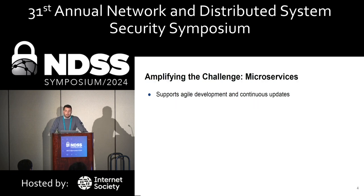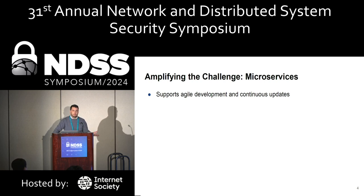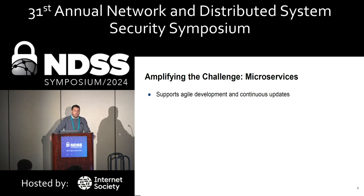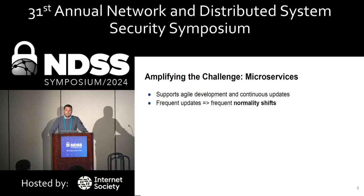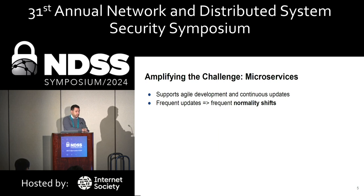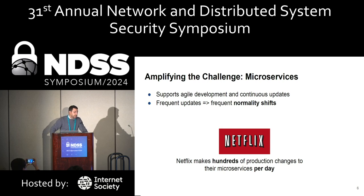The problem of baseline aging can get amplified in the context of dynamic deployments such as microservices. Microservices support agile development — continuous updates and continuous incremental changes. These incremental changes can be very frequent, leading to frequent normality shifts. To illustrate how frequent these changes can be, Netflix makes hundreds of production changes to their microservices per day.